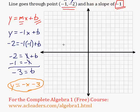I'm also going to sketch it just to show everyone that we're right. So the line goes through the point (-1, -2). So (-1, -2) right here. And it has a slope of -1. So we go over to the right by 1, down by 1.